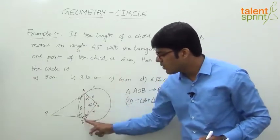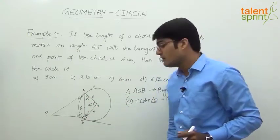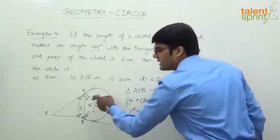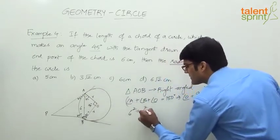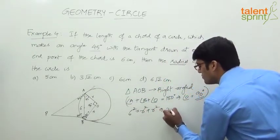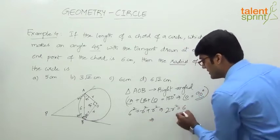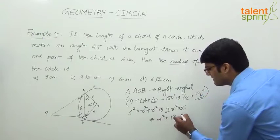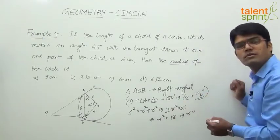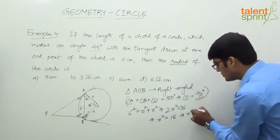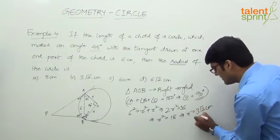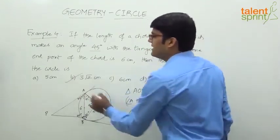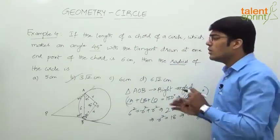The chord length is 6 centimeters, so the hypotenuse is 6. Applying Pythagoras: 6² = r² + r², which gives 36 = 2r², so r² = 18, and r = √18 = √(9×2) = 3√2 centimeters. So the answer is option B — 3√2 centimeters.